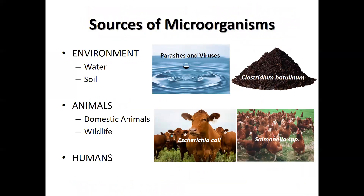Microorganisms that cause foodborne illness come from many sources. Some come from environmental sources such as water or soil. Clostridium botulinum, the bacteria that causes botulism, is a naturally occurring soil microorganism. Therefore, any food that contacts soil at some point — which is basically all food — may be contaminated with the spores of this organism. In a food exposed to oxygen, this is okay because the bacteria cannot grow and produce toxin. But in a food item that has an anaerobic environment, such as a canned food, we assume that the bacteria is present, so we have to ensure that it does not grow in our canned food.